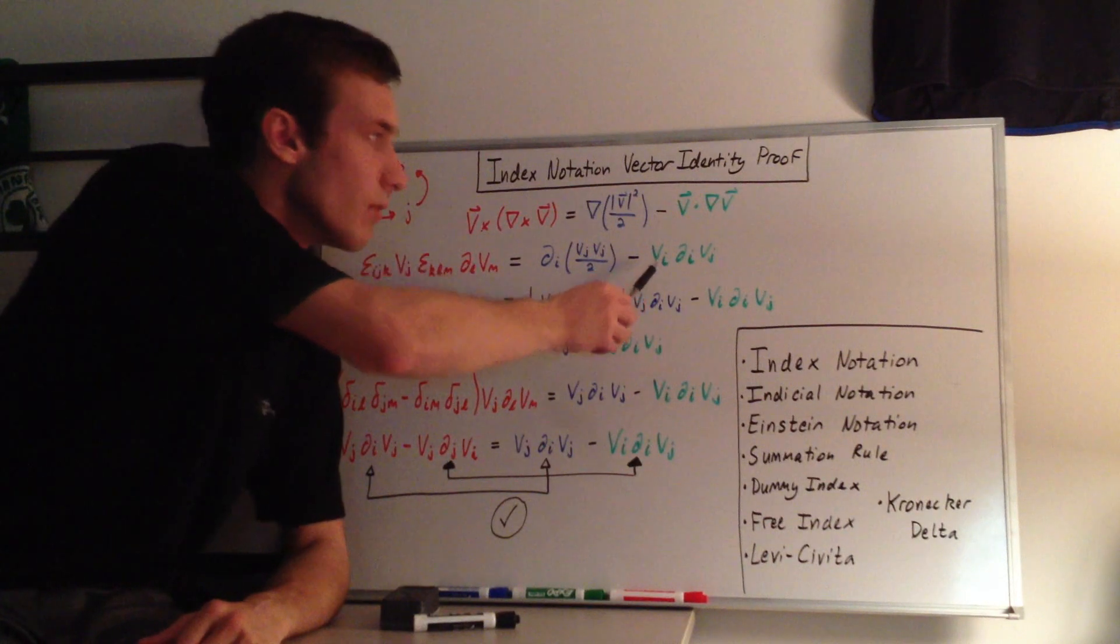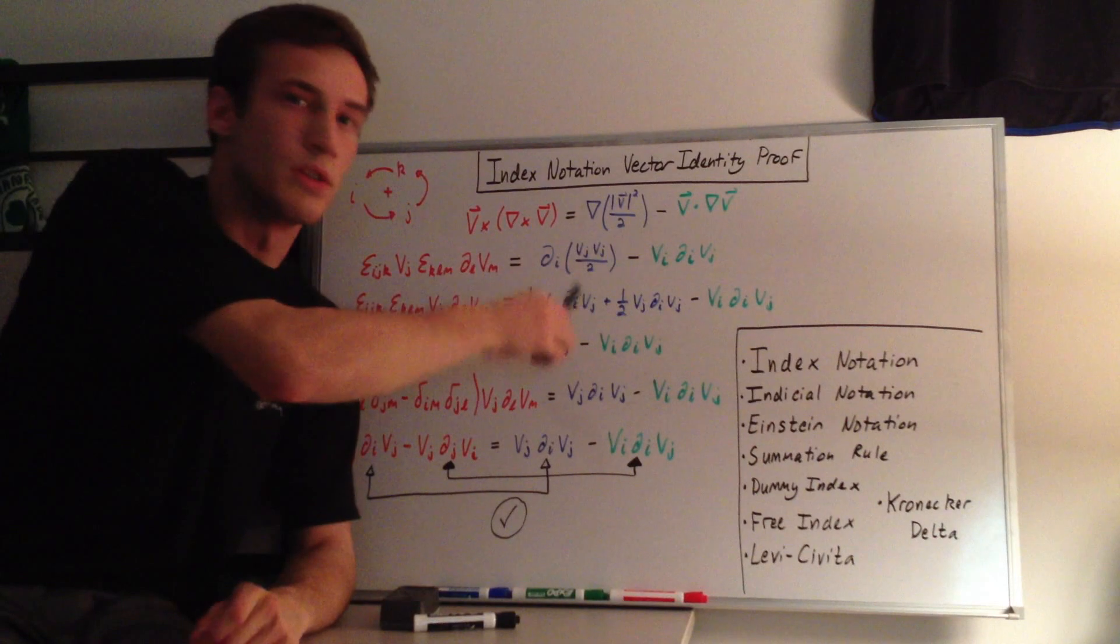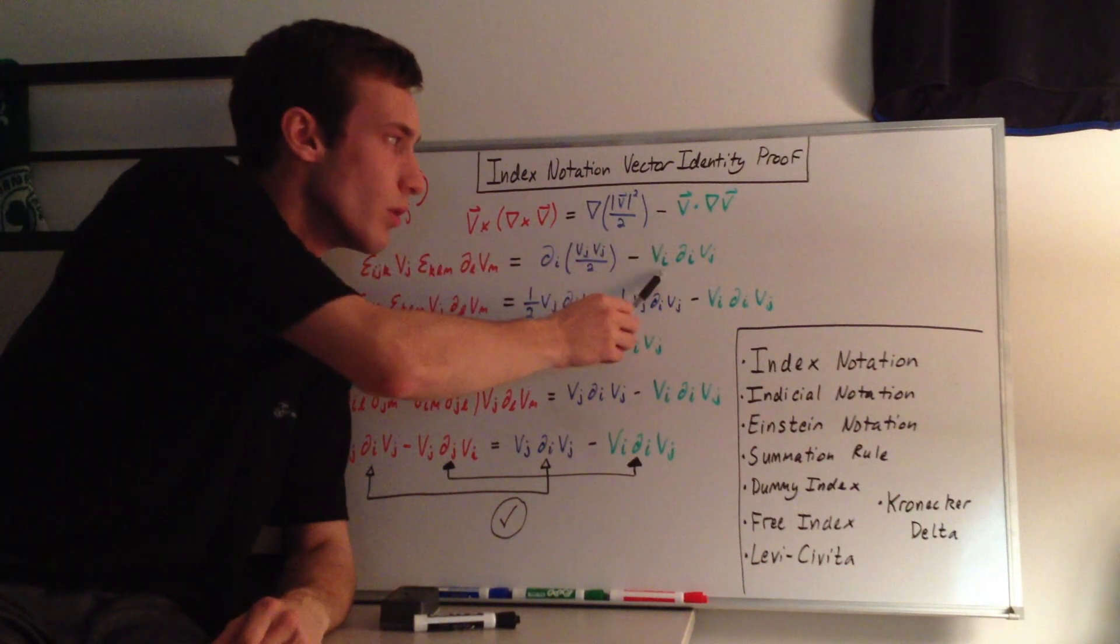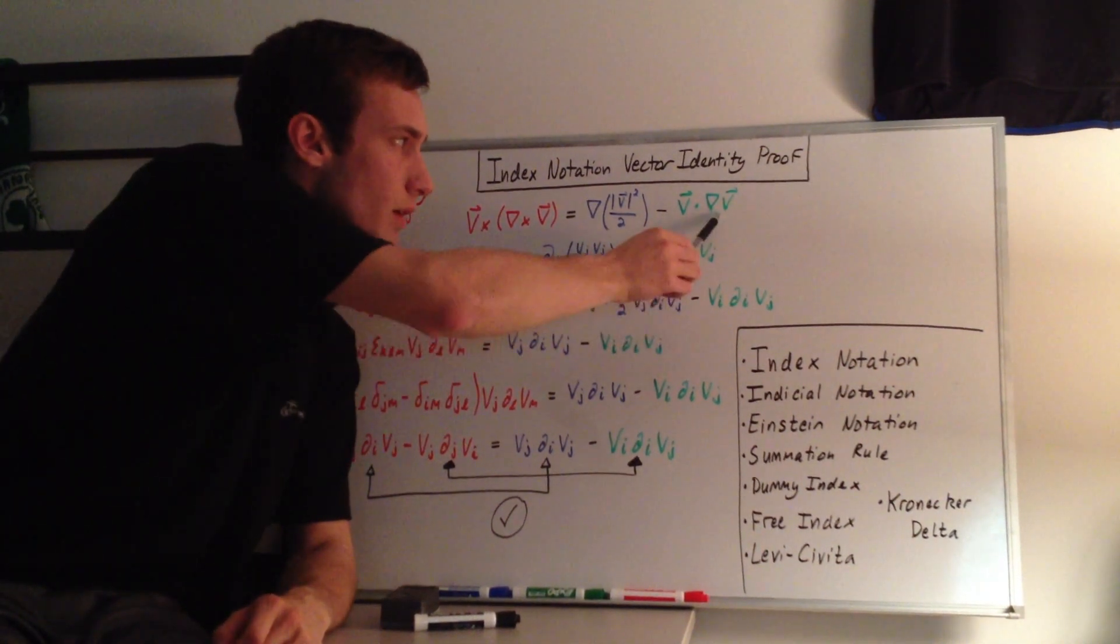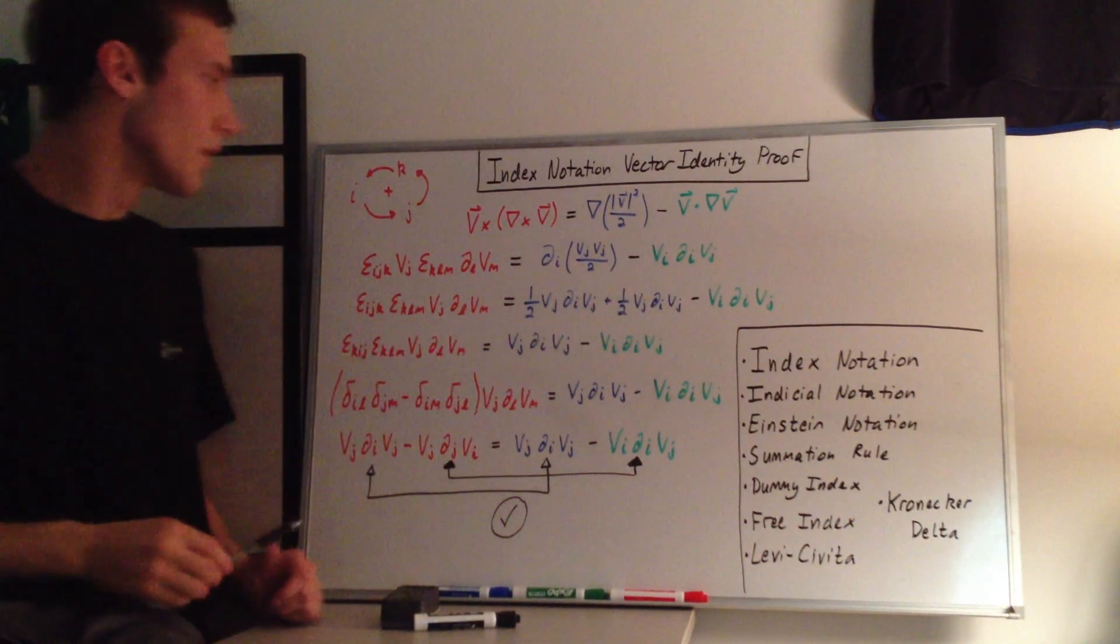And then in the green here we have the velocity. And with the dot product, like I was saying here with the dot product, the indices are the same. So we're dotting the velocity and the del operator. So those are both going to have the same index. And then the velocity here is going to have a new index j. So this is going to be v_i, d_i, v_j.